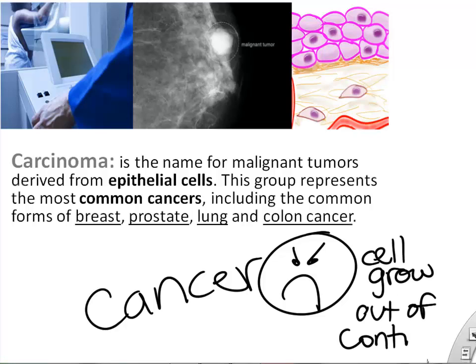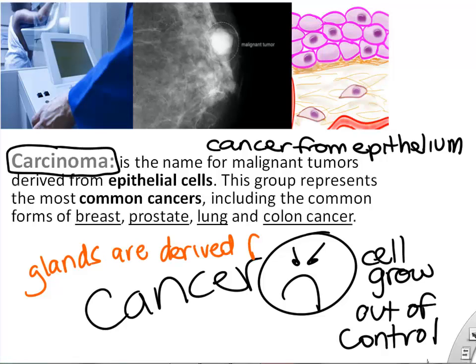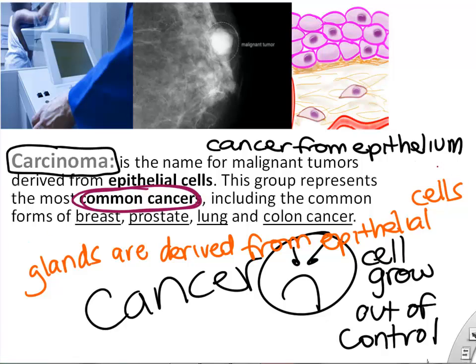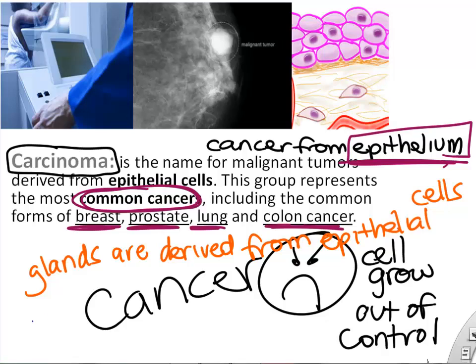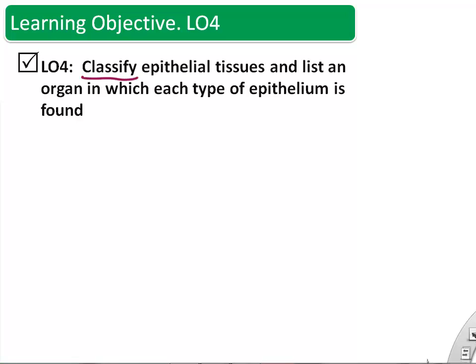Sometimes epithelial cells don't die and instead grow out of control — that's why epithelial tissues can sometimes lead to cancer. Most cancers you've heard of are epithelial-derived. The word carcinoma describes cancers that come from epithelial cells. Glands are epithelial cells too — things like breast glands and the prostate gland — so common cancers are derived from epithelia.